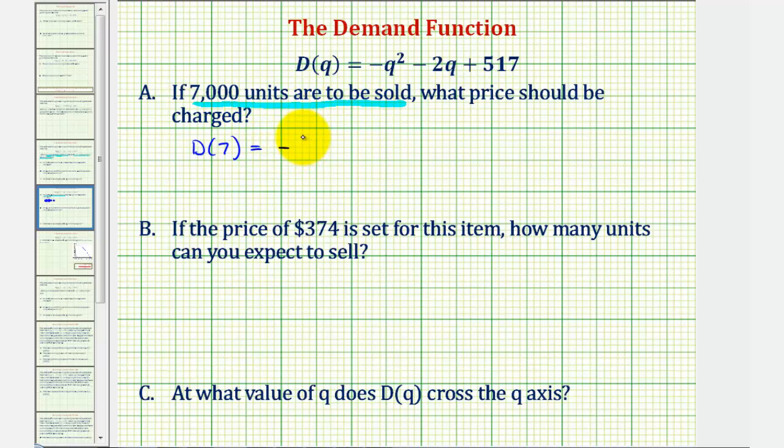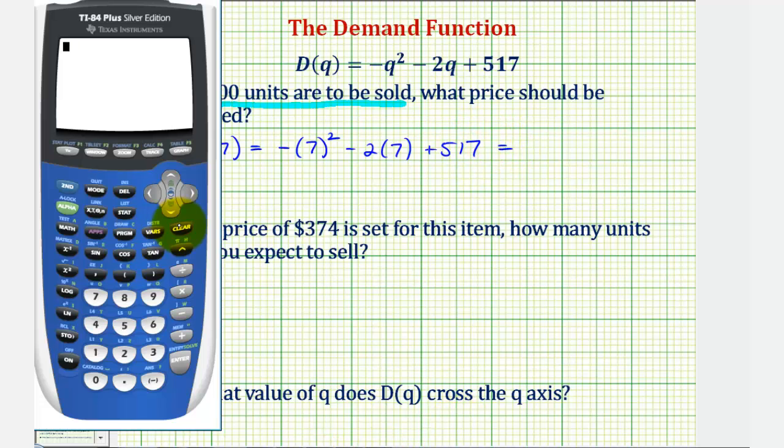So we'd have negative and then 7 squared. Notice how the exponent of 2 is attached to the positive 7, not a negative 7. And then we have minus 2 times 7 plus 517. And now we'll go to the calculator. So we have negative and then in parenthesis 7 raised to the second minus 2 times 7